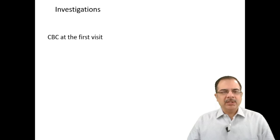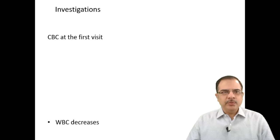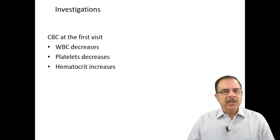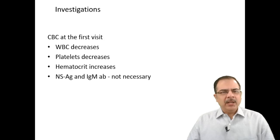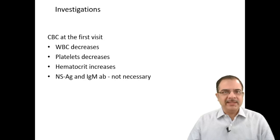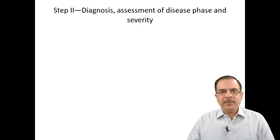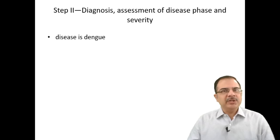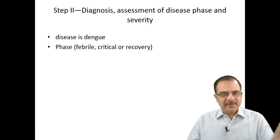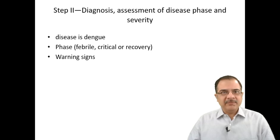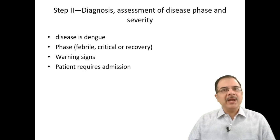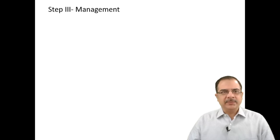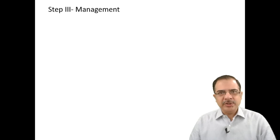For investigations, CBC should be done — WBC will be reduced, platelet will be reduced, and hematocrit will increase, representing a plasma leak. NS1 antigen or IgM antibody can be done but are not necessary in limited resources to make a diagnosis. Step two involves diagnosing dengue fever, identifying the phase, assessing warning signs, and deciding on admission. Step three is management.